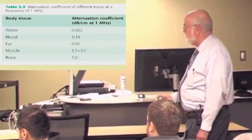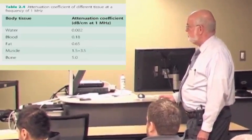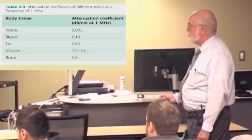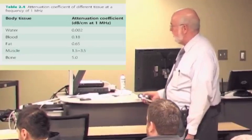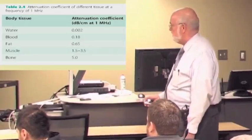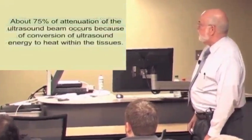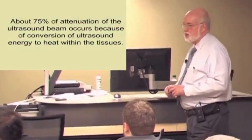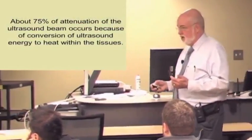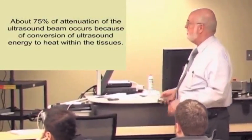And if you try to go through bone, there's a huge amount of attenuation. This is in decibels per centimeter at 1 megahertz. We usually scan at 3.5 or 4 megahertz, so actually you would end up with almost no energy getting past this structure back here. And again, we mentioned the fact that about 75% of attenuation is actually because we're converting this ultrasound energy into heat energy.